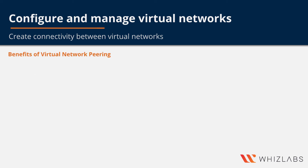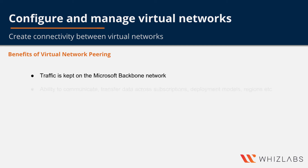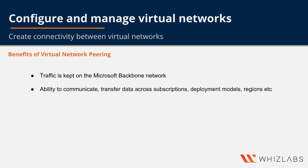The benefits of virtual network peering include: network traffic between peered virtual networks is kept private; traffic stays on the Microsoft backbone network rather than the internet; and there is no need for any public internet, gateway, or encryption for communication between resources. With peering, you can transfer data across different subscriptions, deployment models, and regions, with no downtime to resources in either virtual network when creating or after creating the peering.